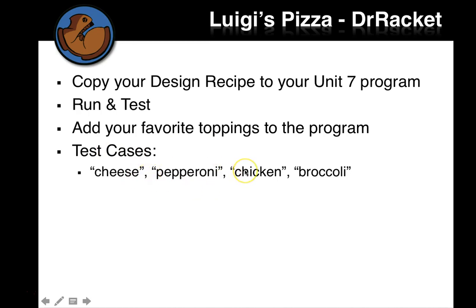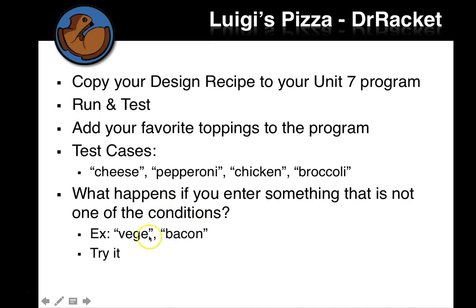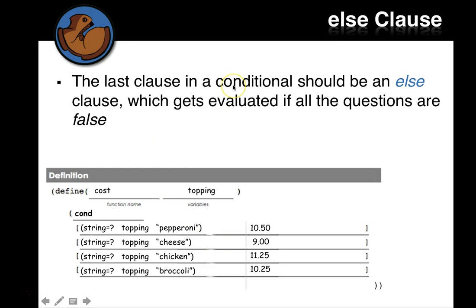We already have these test cases. But what happens if you enter something that's not on the list? So give it a try. And put in vegetables or bacon or something else that's not on the list. What do you get? So the last clause in a conditional, we want to control what we get. So there's an else clause that actually we can put in as the last. So right down here, so we had our conditional brackets, our cond brackets. We can have the last one be else. And then put whatever we want to return. So it's a bracket just like the others since the last one. And you can put else. And you can put one cent if you want to charge one cent. These guys want to charge a million dollars. So if you order something that's not on the list, the system here is going to come back a million dollars.